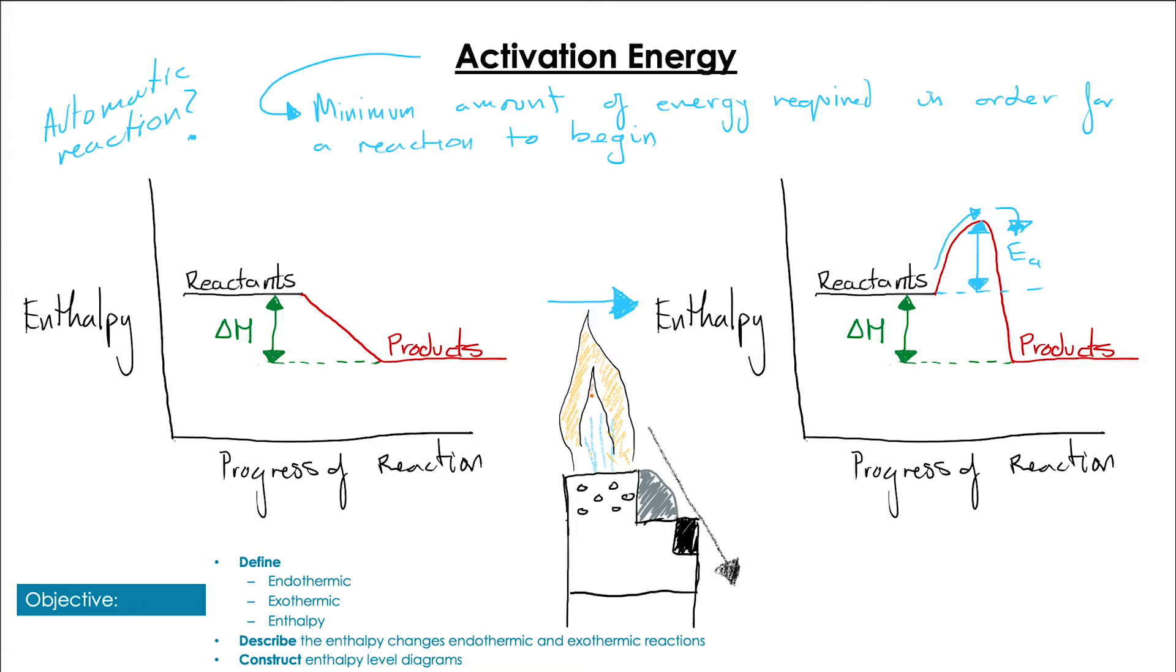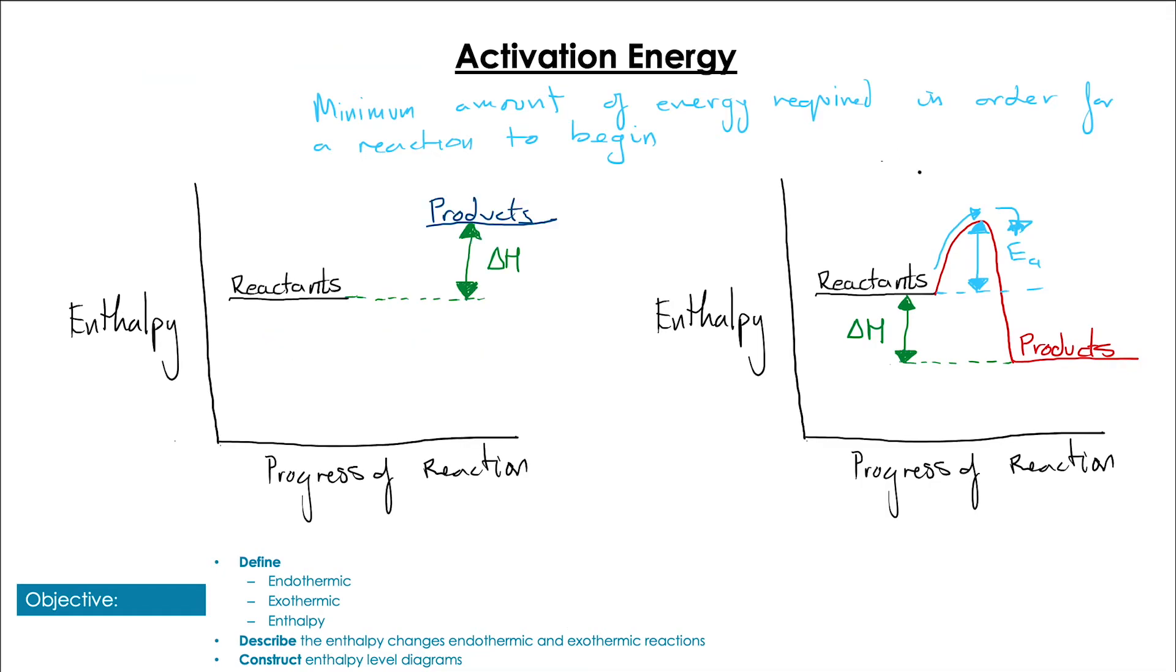So we can complete the graph for an endothermic reaction in a very similar way, noticing that the activation energy is always a positive value. So we go up from the reactants above where the products enthalpy will be and then back down to the products. And once again we would label our activation energy as the difference in enthalpy from the reactants to the very peak of that line.